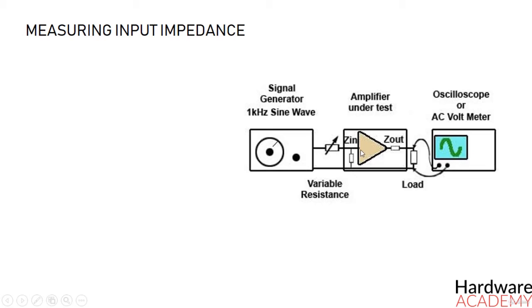So the first step is to set the signal generator to provide a sine wave output at 1 kHz.